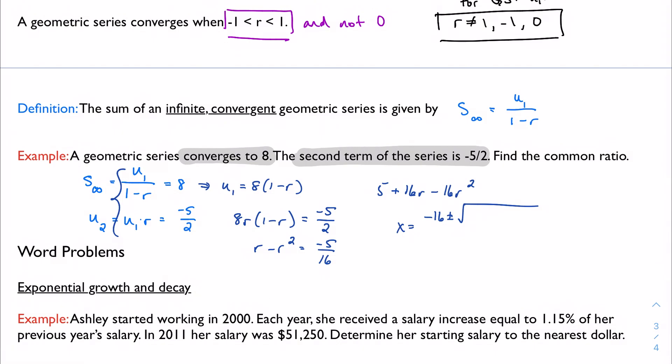Plus or minus the square root of 16 squared, 256, minus 4 times a times c, so plus 320. Gross. Over 2a. Negative 32. So 256 plus 320 is 576 and the square root of that, I believe, is 24. Yeah. So negative 16 plus or minus 24 all over 32.